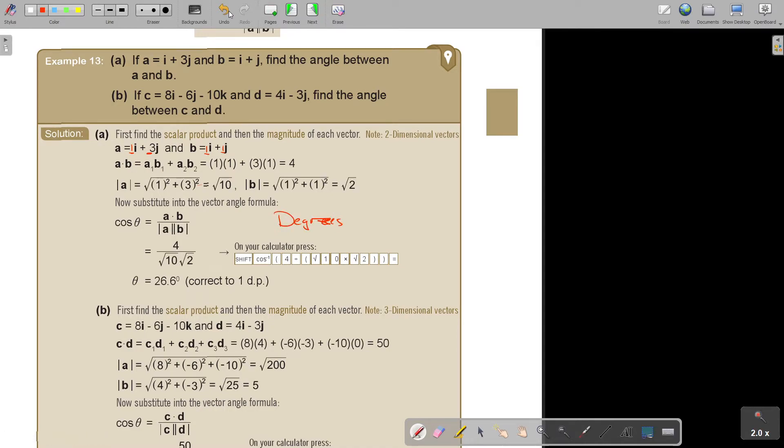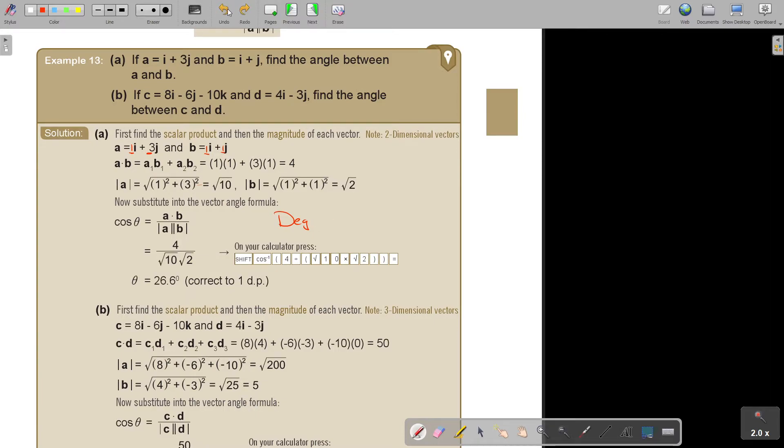So press that mode, mode, and 1. And then you press shift, cos, and then a bracket. So it's going to be that 4. Are you with me? Divide. And then you can press the bracket again. Square root 10, multiply square root 2, close the bracket. That's for the bottom. Close the bracket for the whole part, and then equals. And then check what they say. If they say nothing, it's correct to one decimal place. If they say something, sometimes they say to the nearest unit. So just check. They didn't say anything, so make it 1 decimal place.